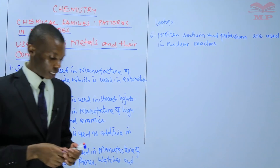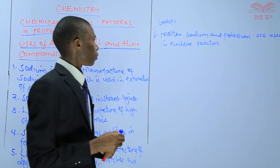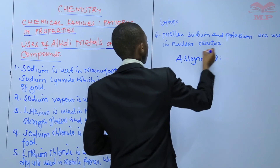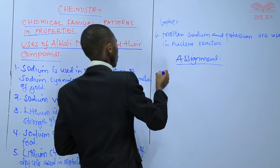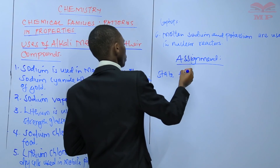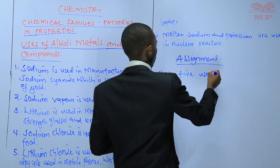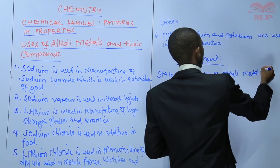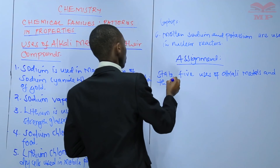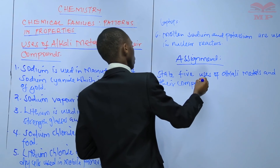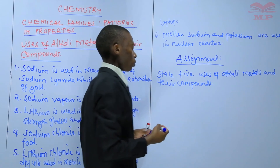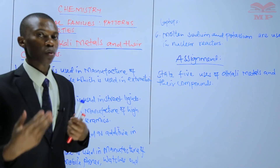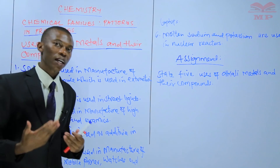That brings us to the end of our lesson. Before we end, I will leave you with this assignment: state five uses of alkali metals and their compounds. Ensure that you've done that, and if possible, look for more uses of alkali metals and their compounds.